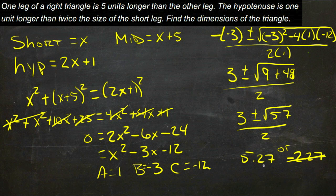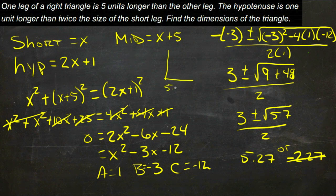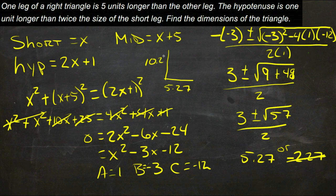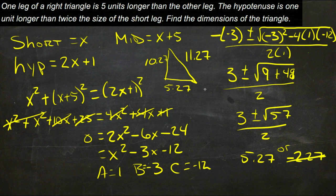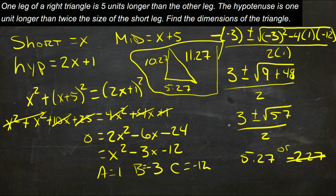5.27, if that is x, then our short side would be 5.27, our middle side would be 10.27, and our long side would be 10.27 plus 1, or 11.27. That seems reasonable, so we'll buy that answer, and we're done.